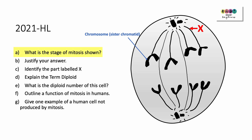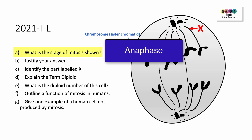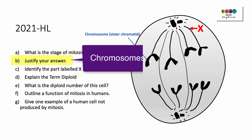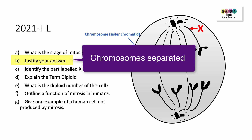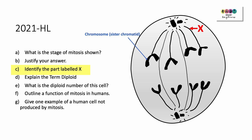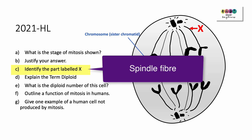What is the stage of mitosis shown? It's anaphase — remember, A equals away. Justify your answer: this is anaphase because the chromosomes have been separated. This happened because the spindle fibres shortened or contracted. Identify the part labelled X — it's a spindle fibre.